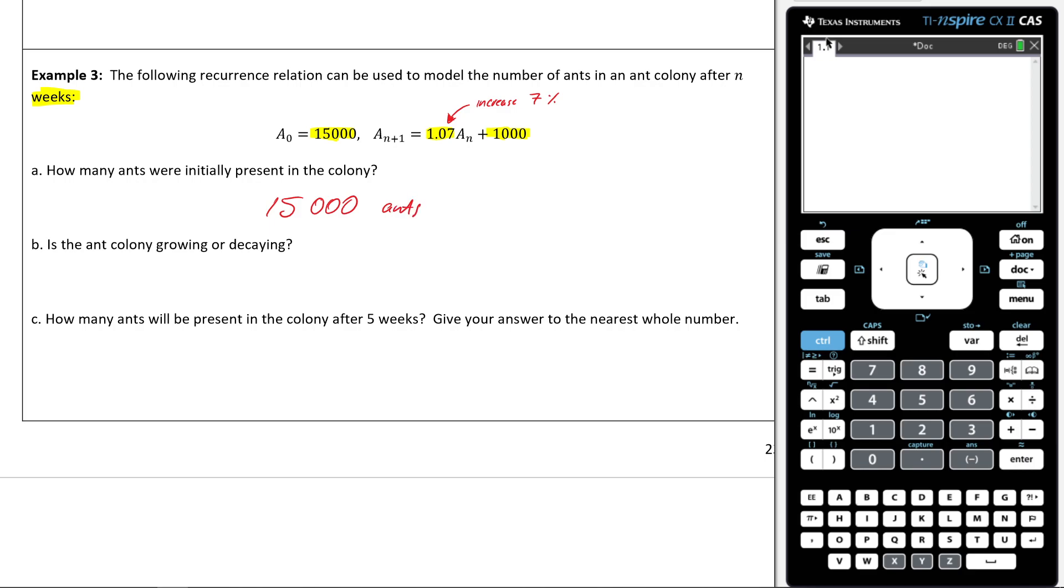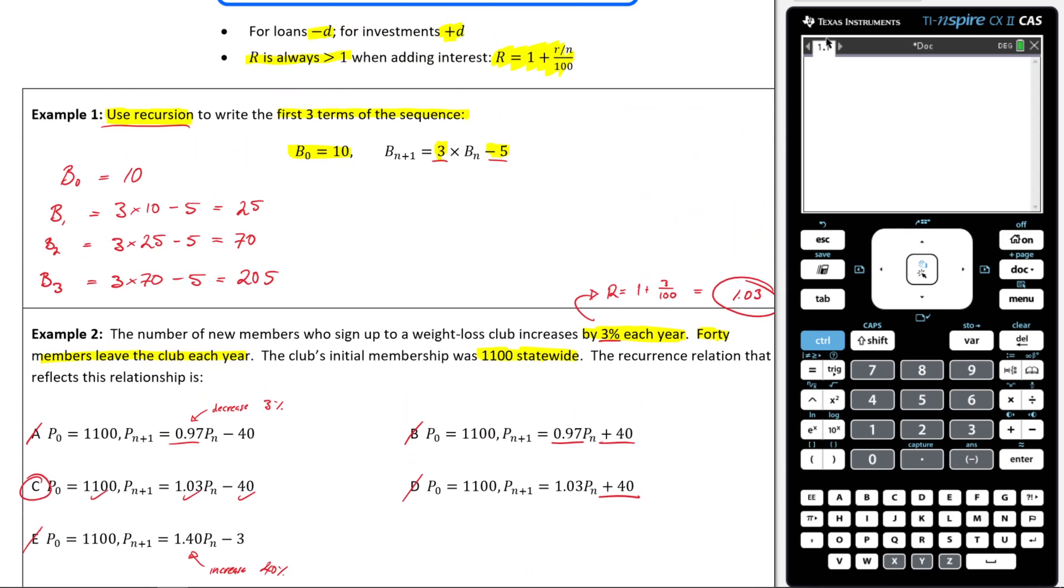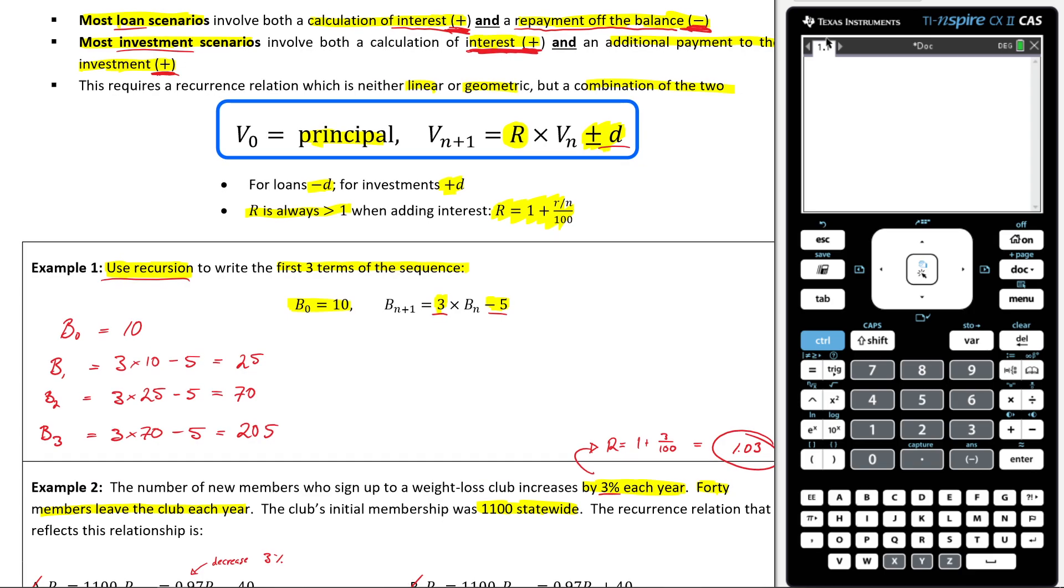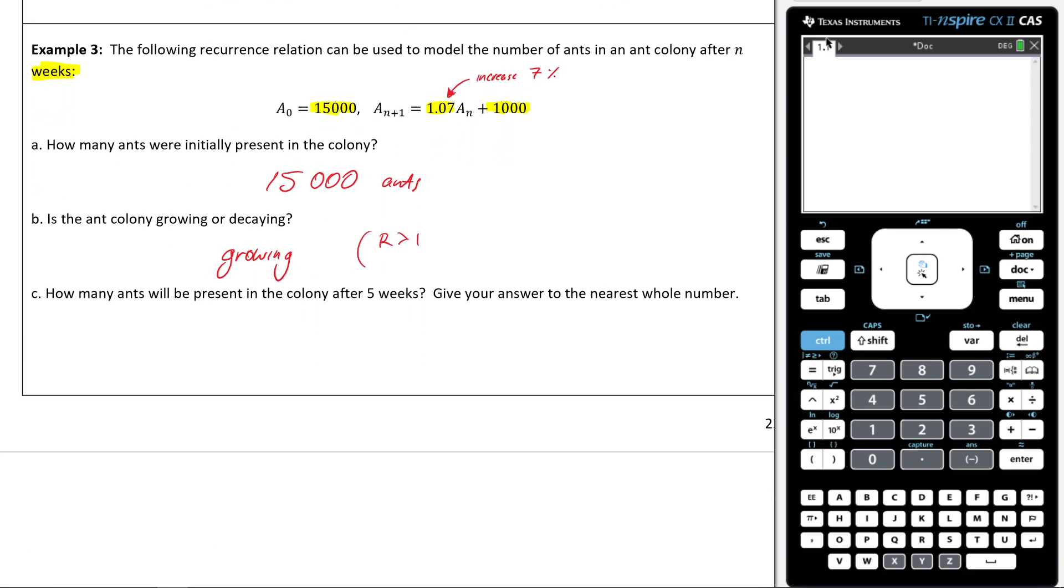Is the ant colony growing or decaying? It is definitely growing. And the reason why we know it's definitely growing is because my r is greater than 1. And also, the d value here, so remember the d value is this here. The d value is also greater than 0. It's positive. It's a positive d there. We're adding on to it. So it's definitely growing. There's no doubt about that.